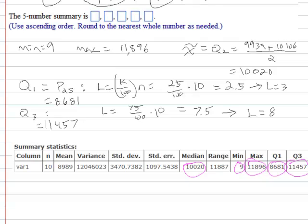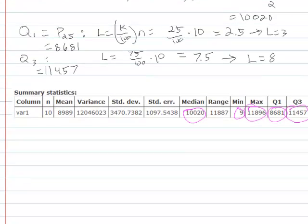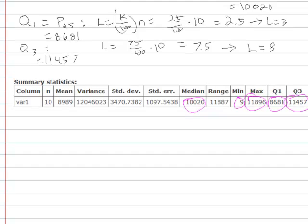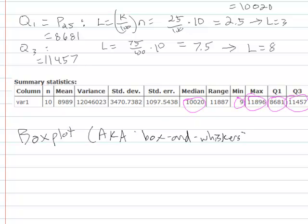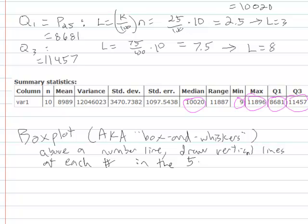But that finishes up our five number summary. And then we can do a visual representation of these things in what is called a box plot. So, a box plot, which is also known as a box and whiskers plot, or just box and whiskers.